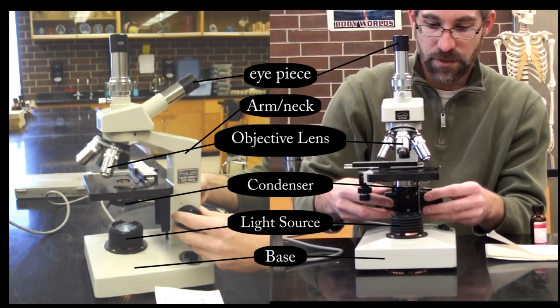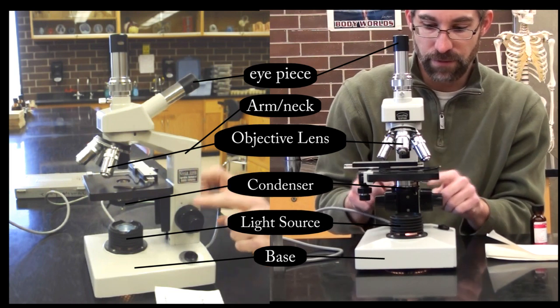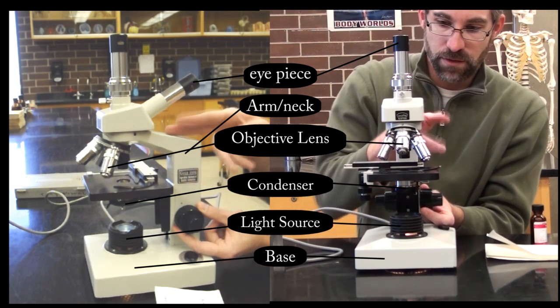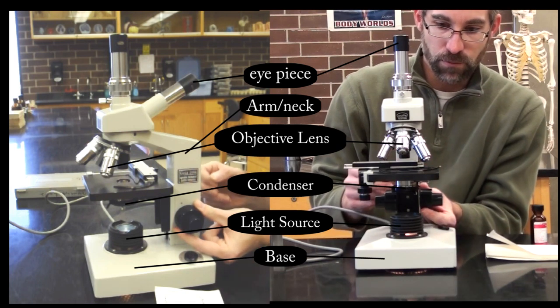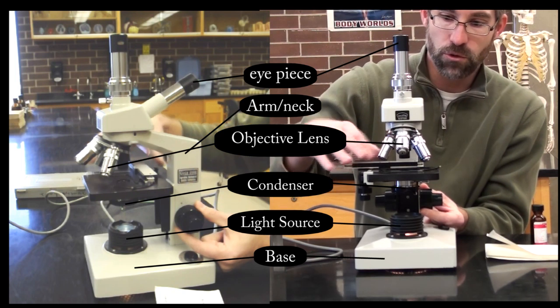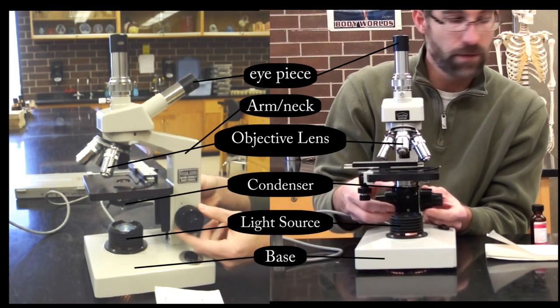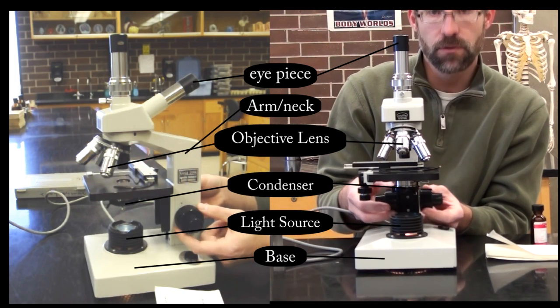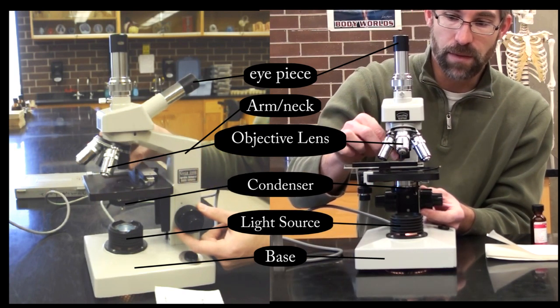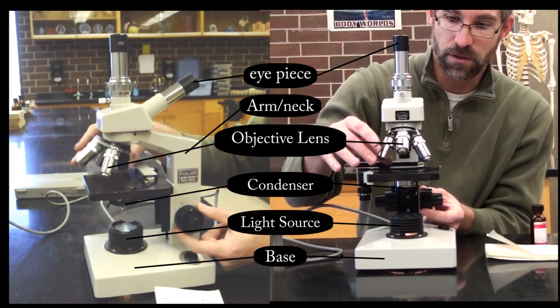These are our focus knobs. We have two of them. We'll have a large one, the closest one to the neck here. This will move the stage up and down in a very coarse manner. So rough focusing we do with this coarse adjustment knob. We will only use it under low magnification so we don't crush our slide or lens.